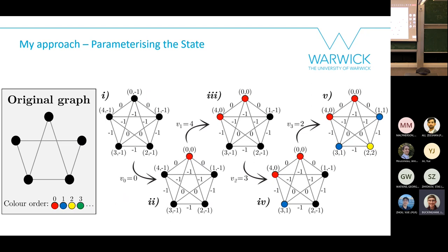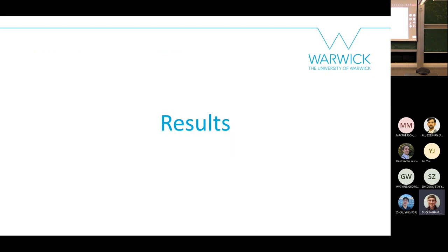Here's an example of how an episode — the coloring of a single graph — might play out. With the explanation given so far, you should be able to follow along. Let's now talk about results, as I'm running short on time.